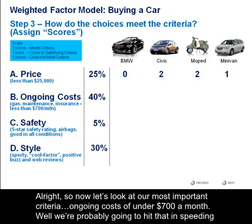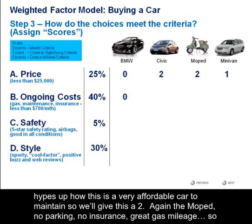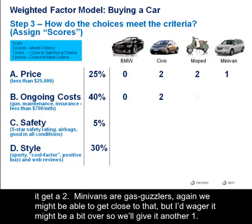Let's now look at our most important criteria, which is ongoing costs of under $700 a month. Well, we're probably going to hit that in speeding tickets alone with the BMW — so factoring in that we'll be paying crazy insurance on top of that, we're definitely going to give this a zero. The Civic is definitely hyped up as a very affordable car to maintain, so we're going to give the Civic a two. Again, the moped — no parking, no insurance, great gas mileage — so that's going to get a two as well. Minivans can sometimes be gas guzzlers, so we might be able to get close to that $700 mark, but I'd wager it might be a bit over — so we're going to give it another one.